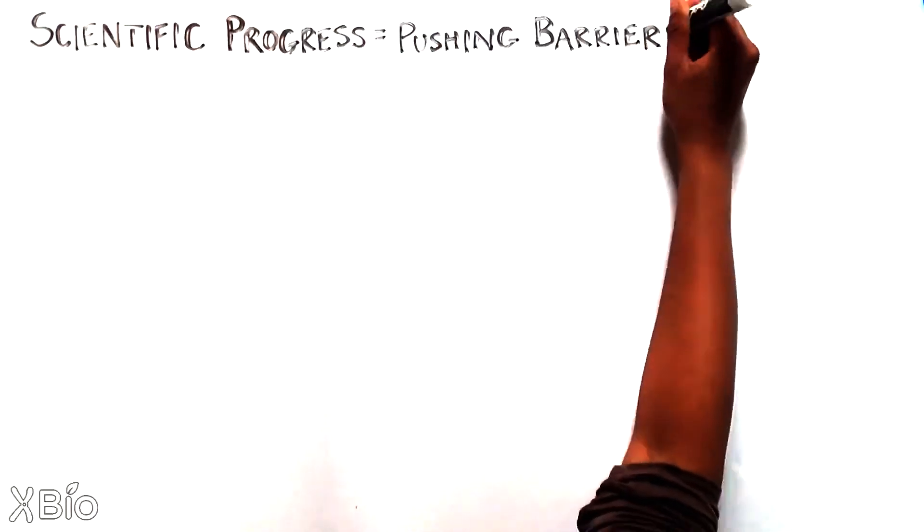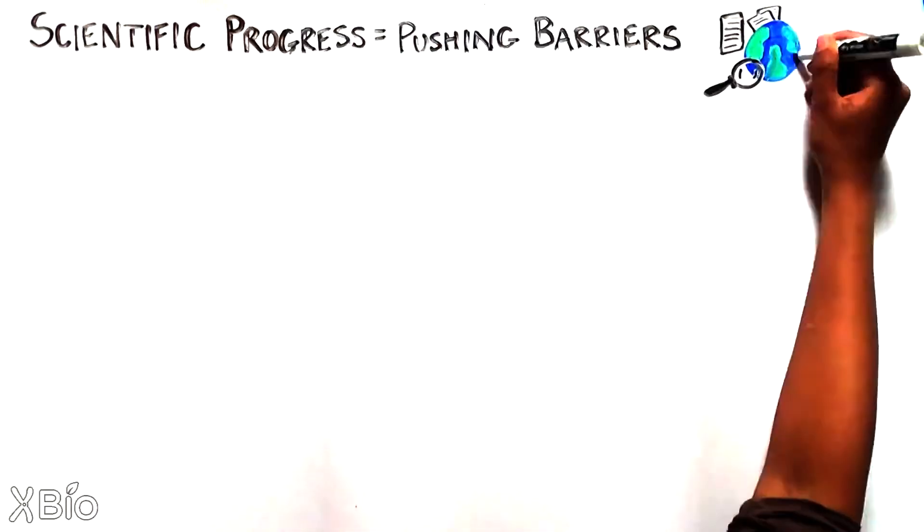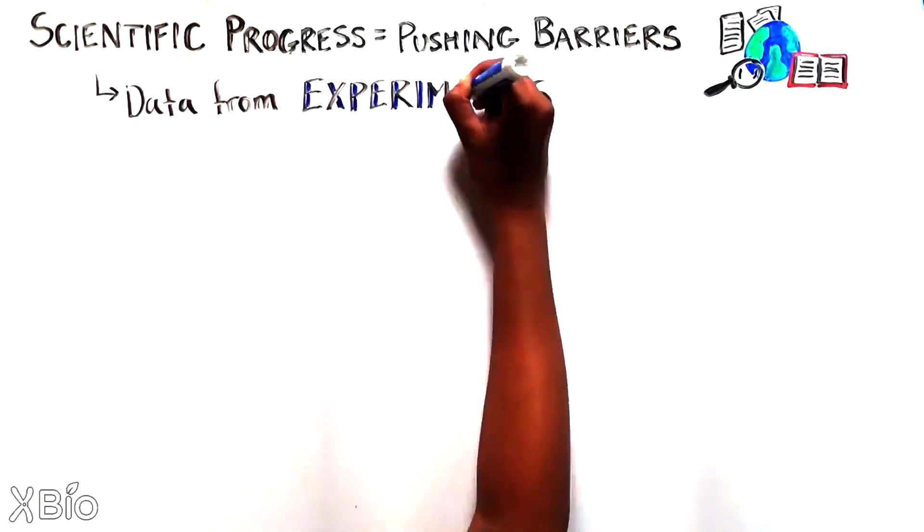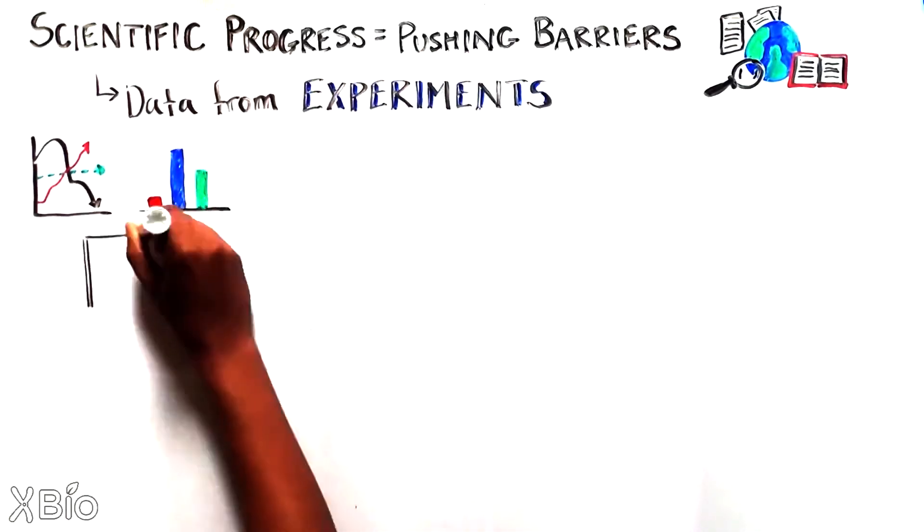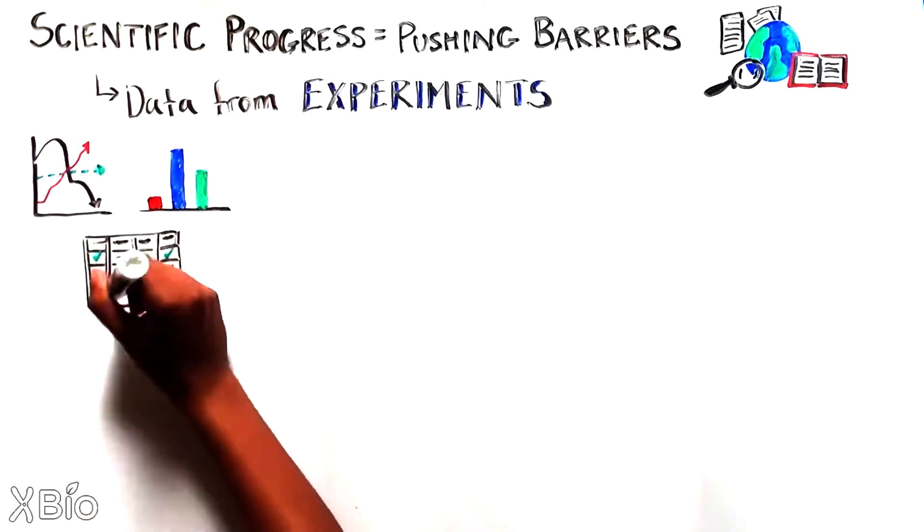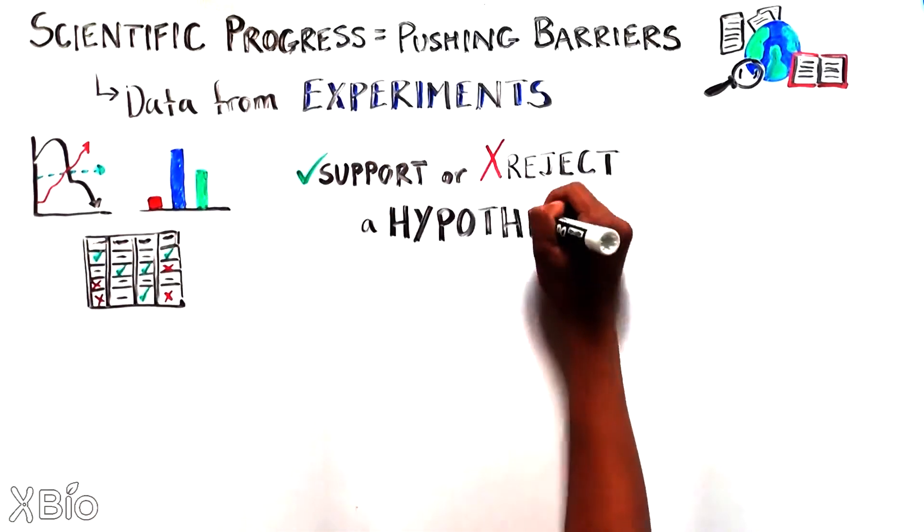Scientific progress is about pushing the boundaries of what we know about how the world works. This happens by looking at data from experiments. Experiments are designed to test the hypothesis and either support or reject it.